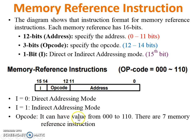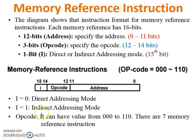The opcode can have values from 000 to 110. There are 7 memory reference instructions. If i equals 0, then 7 instructions; when i equals 1, then again 7 instructions, making a total of 14. But combined, there are only 7 instructions.